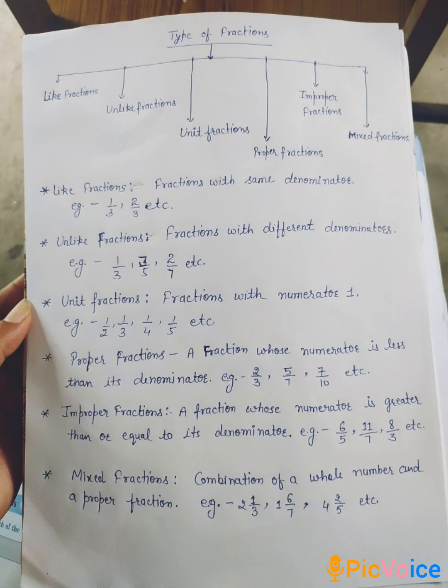And last one, mixed fraction. Combination of a whole number and a proper fraction is called mixed fraction. For example, two whole one by three, one whole six by seven, four whole two by five, etc. are mixed fraction.